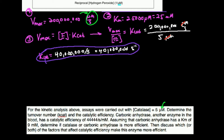Kcat has another name: it's called the turnover number. Literally, it means if you have one molecule of the enzyme catalase — not a mole, not a micromole, not a dozen — one single molecule of the enzyme is able to convert 40 million substrates into product per second. People are often confused about what kcat or the turnover number is. It's literally one molecule of enzyme able to turn 40 million substrates into product per second.